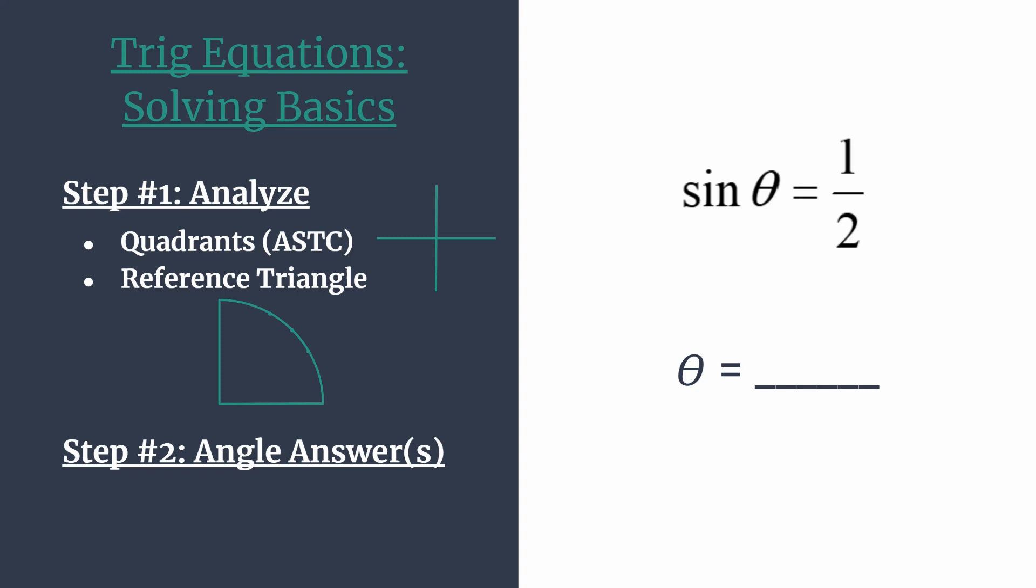All right, so for sine theta equals one half, let's first analyze which quadrants we should work in. And to do this, we're going to use the acronym ASTC. Think all students take classes. And label your quadrants, starting in quadrant one and working counterclockwise, A, S, T, C.